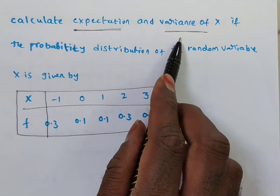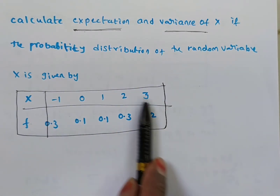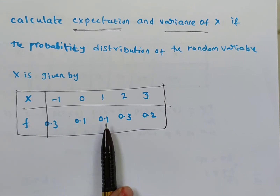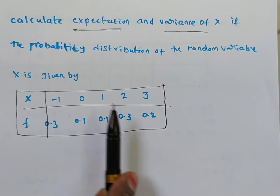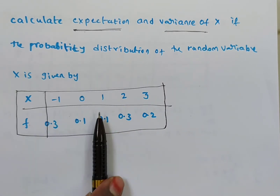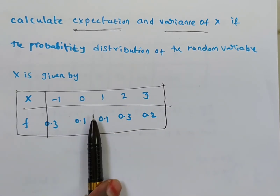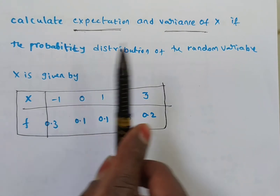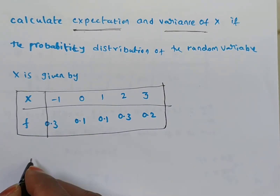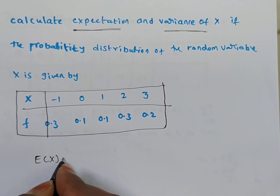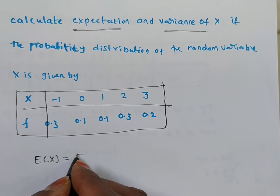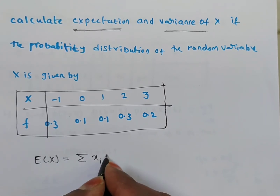So what do you need to find? Expectation and variance. They are given the probability distribution directly, so from this we need to find expectation and variance. What is the formula for the discrete random variable expectation? Expectation, denoted E(x), is equal to summation of xi into f(xi).